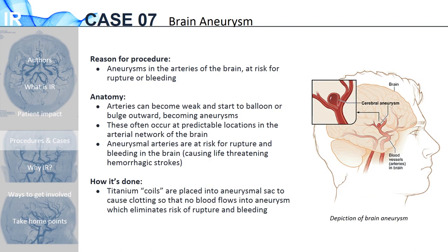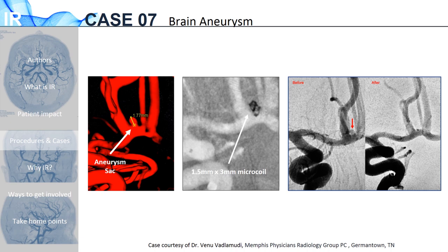Neuro-IR also treats brain aneurysms. These occur when arteries in the brain become weak and begin to balloon or bulge outward. These aneurysms can rupture and bleed, causing life-threatening hemorrhagic strokes. To treat these, metal coils are placed through the arterial system into the aneurysmal sac to cause the blood flow in the sac to clot so that blood no longer flows into the aneurysm, reducing or eliminating the risk of rupture. Here we have a 50-year-old female who presented to the ED with the worst headache of her life. CT of her head showed a large bleed in her brain due to an aneurysm measuring 1.7 millimeters. The interventional neuroradiologist advanced a catheter into the bleeding artery and a microcoil was placed in the aneurysm. The patient's bleeding stopped, she recovered neurologically, and was released from the hospital two weeks later. The final image shows the aneurysm before and after the procedure, confirming the microcoil fixed the aneurysm.